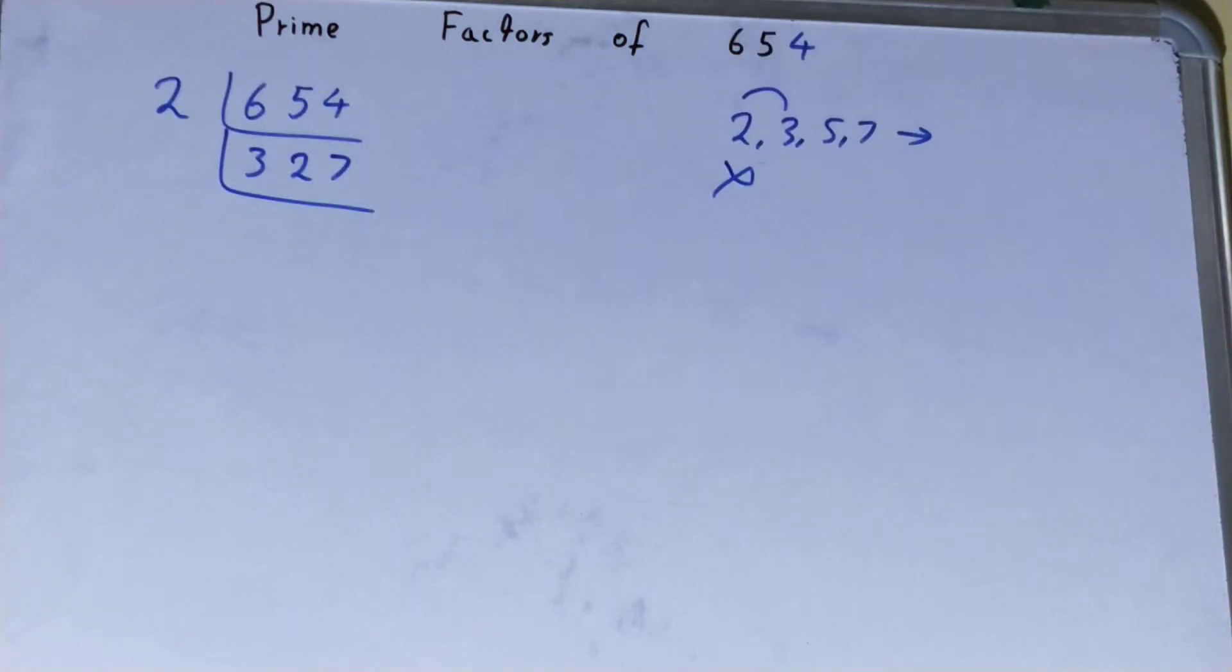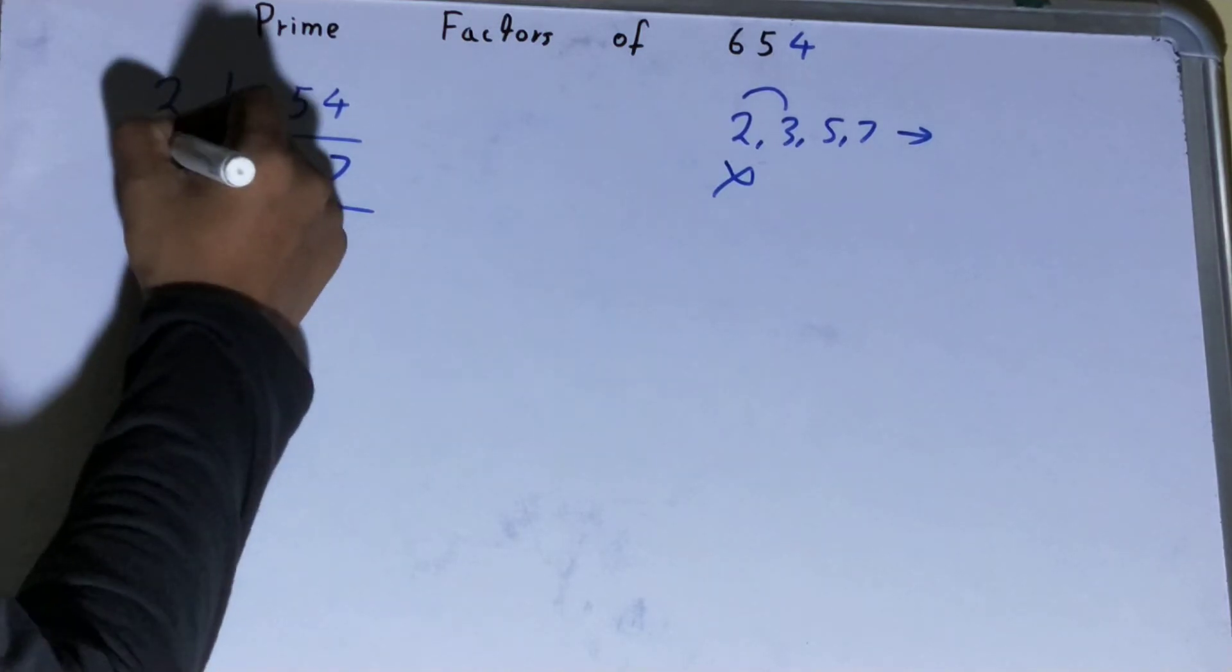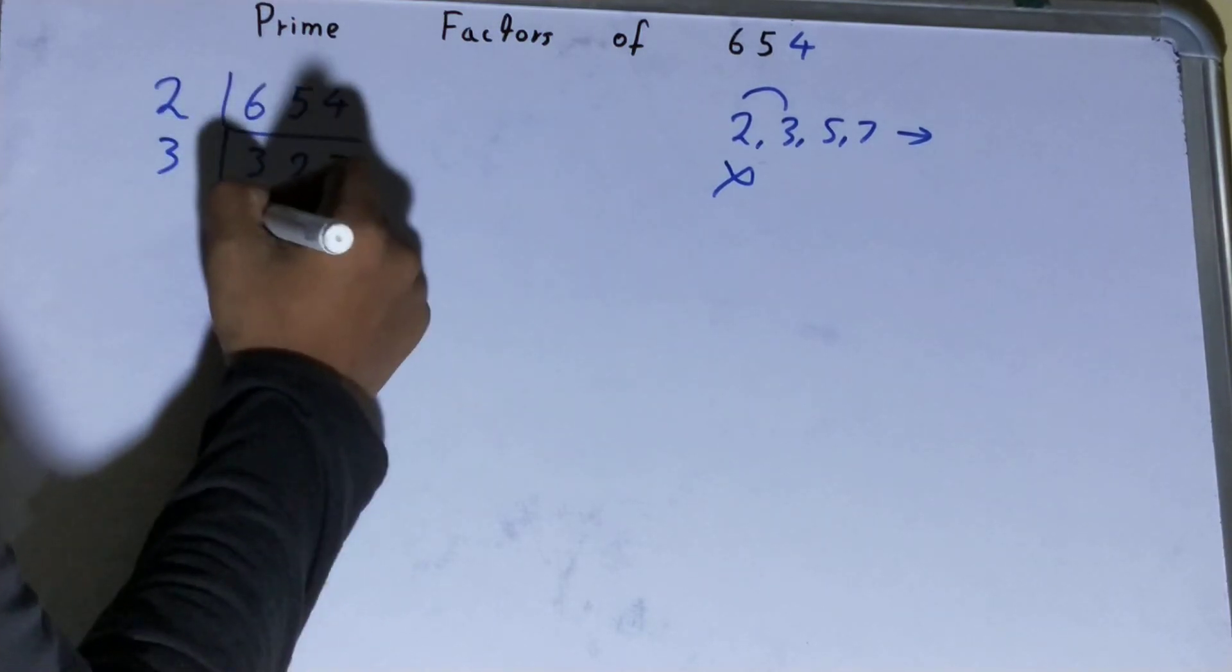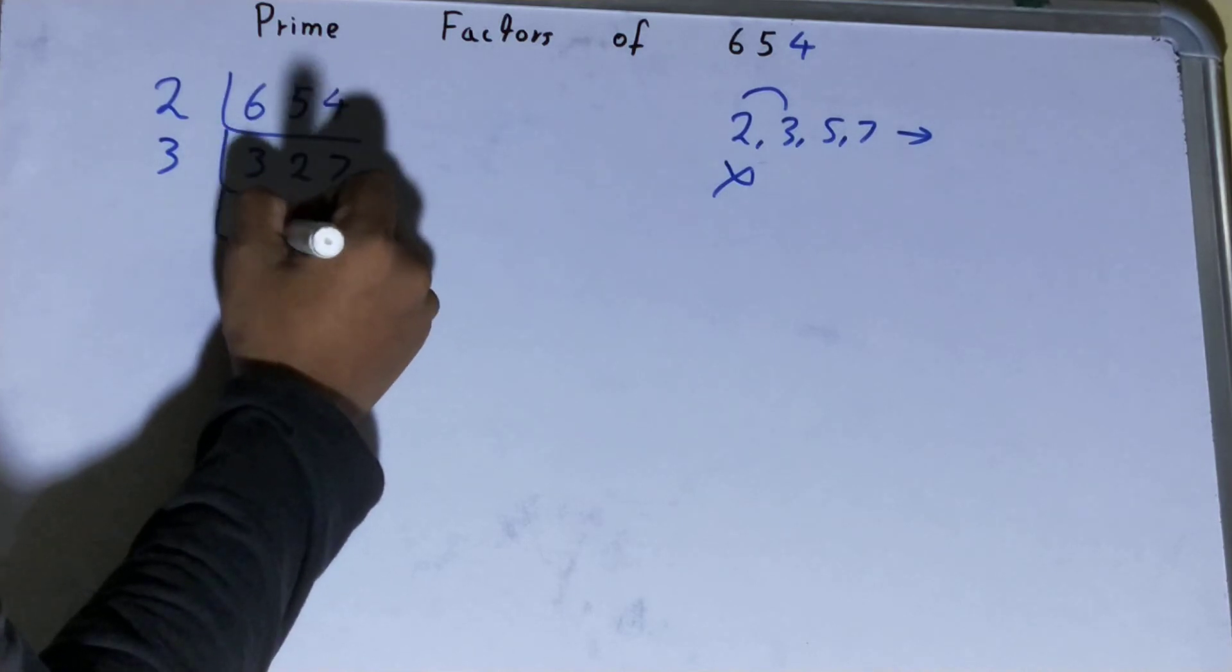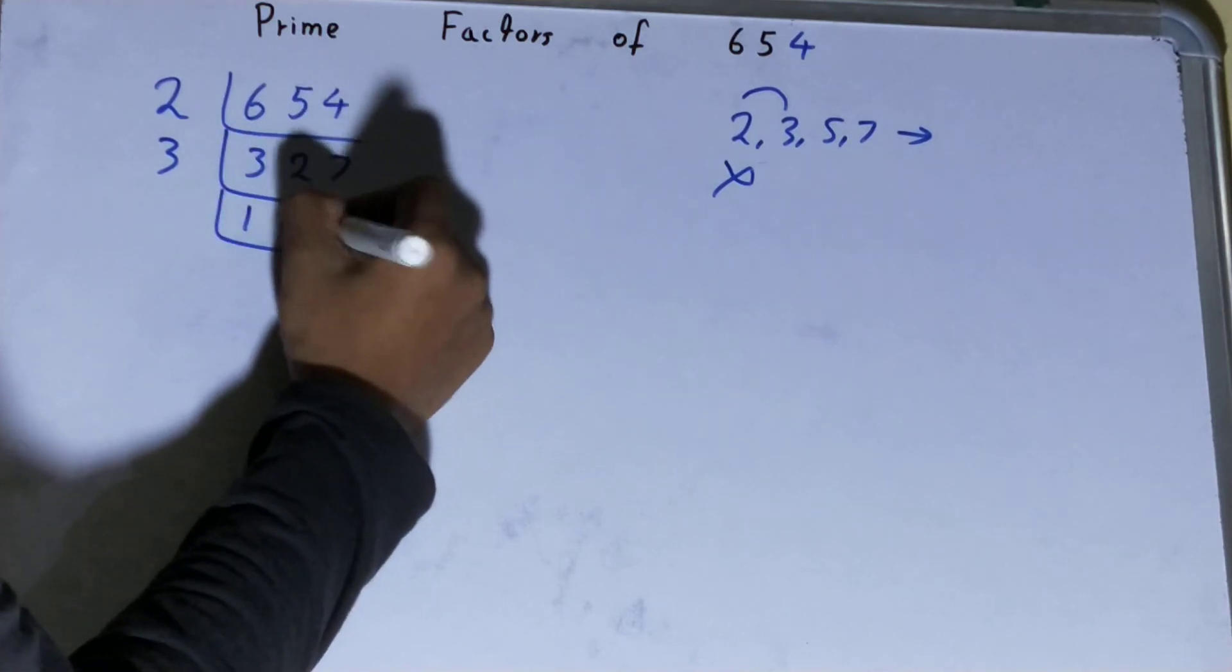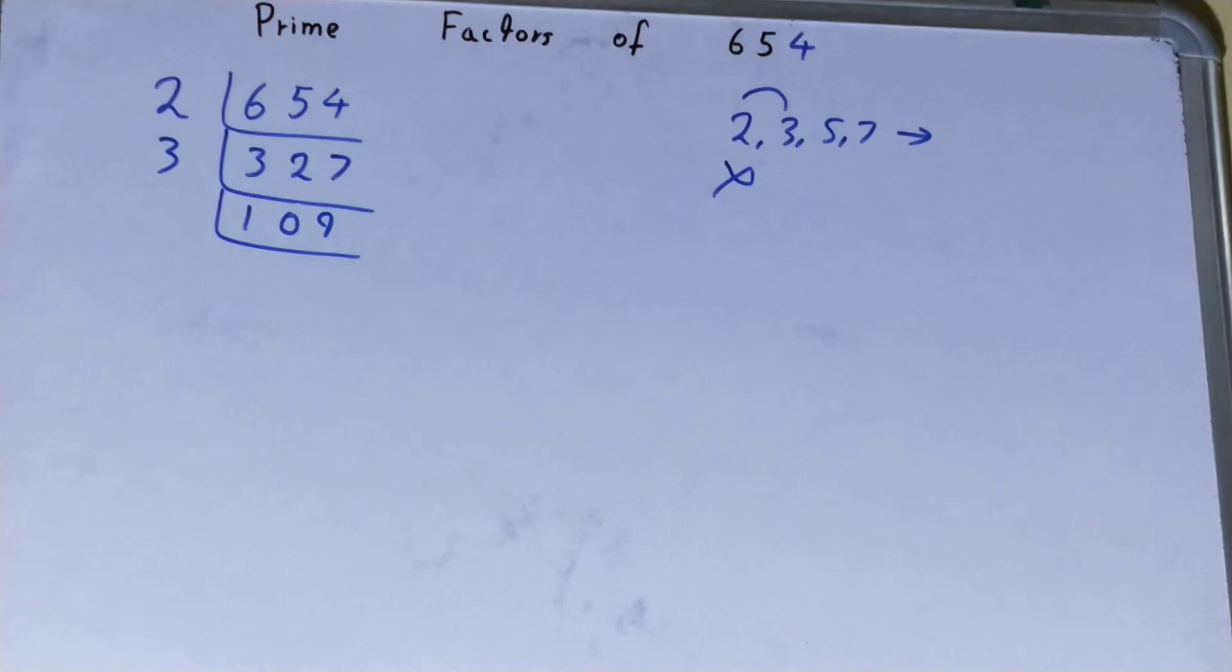That is three. Is the number 327 divisible by three? The answer is yes. So divide it and you will be left with 109. Now 109 is further not divisible by three.